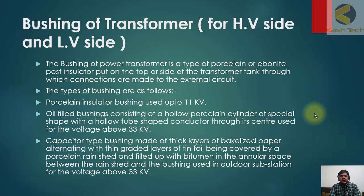The types of bushings are as follows: Number one, porcelain insulator bushing used up to 11 kV. Oil-filled bushing consisting of a hollow porcelain cylinder of special shape with a hollow tube shaped conductor through its center, used for voltages above 33 kV.